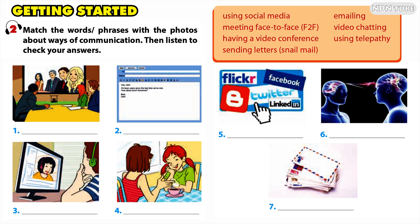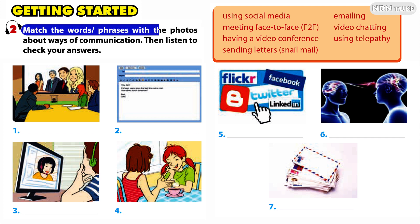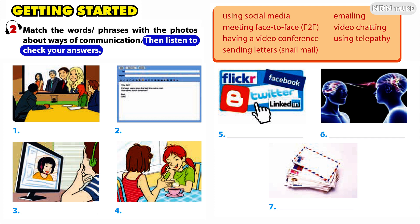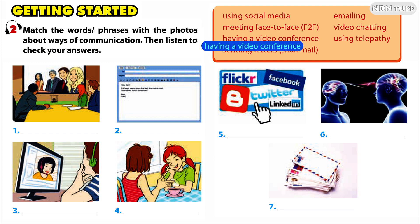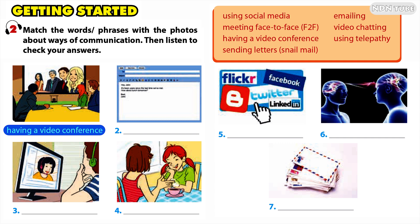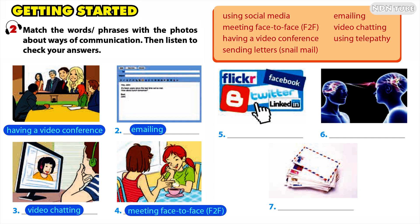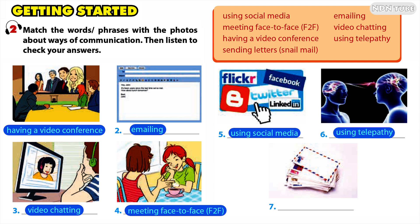Activity 2: Match the words and phrases with the photos about ways of communication, then listen to check your answers. One: having a video conference. Two: emailing. Three: video chatting. Four: meeting face to face. Five: using social media. Six: using telepathy. Seven: sending letters — snail mail.